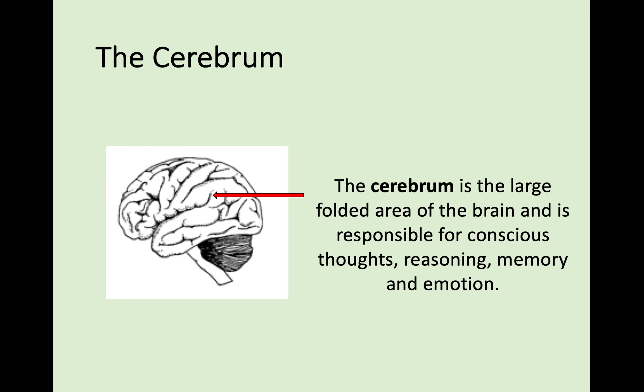The second part is called the cerebrum, and this is the part that is what you normally think of if you think of a brain. It's the large folded area of the brain and that's responsible for all your conscious thoughts — things like your memory, your retention, your reasoning, and the emotion that you have. Things you're thinking about are controlled in the cerebrum, this largest area here.